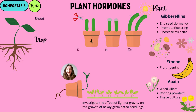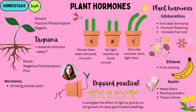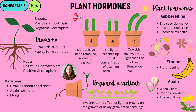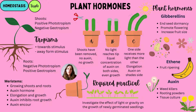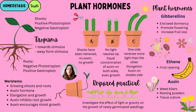Plants have hormones too. If you're a triple scientist, you need to know about tropisms — a plant's ability to respond to a stimulus. A positive tropism means moving towards a stimulus; a negative tropism means moving away. There are two types: phototropism (response to light) and geotropism (response to gravity/soil). Shoots show positive phototropism and negative geotropism, growing upwards. Roots show negative phototropism and positive geotropism, growing downwards.